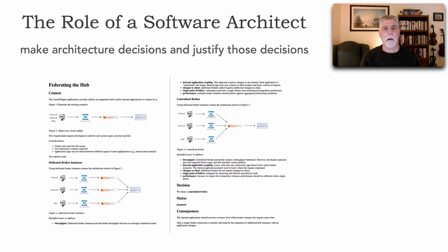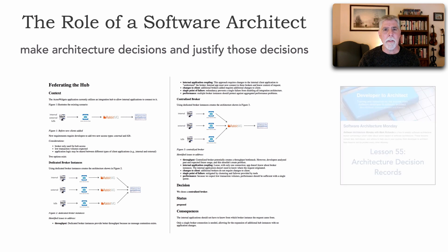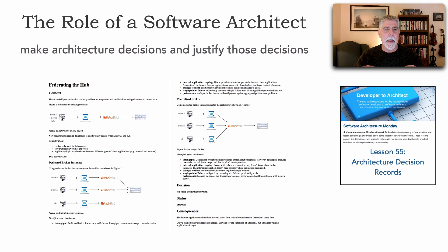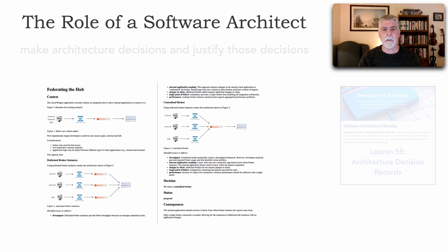Analyzing trade-offs leads to another thing an architect does: make architecture decisions, justify those decisions, and document those decisions. In lesson 55, I talk about architecture decision records — an effective way, my favorite way, of documenting, justifying, and showing the consequences of architecture decisions. It's my favorite way of really documenting a software architecture.